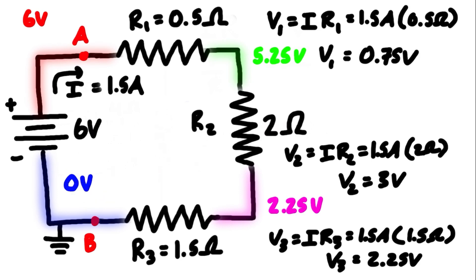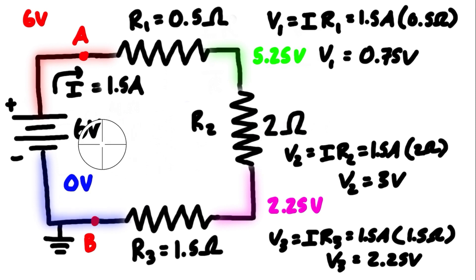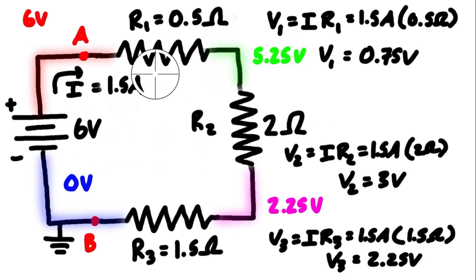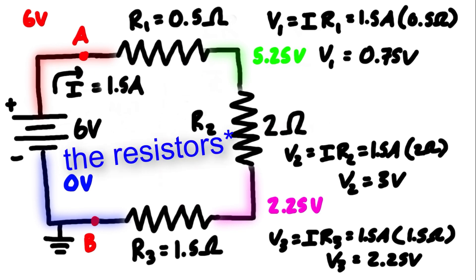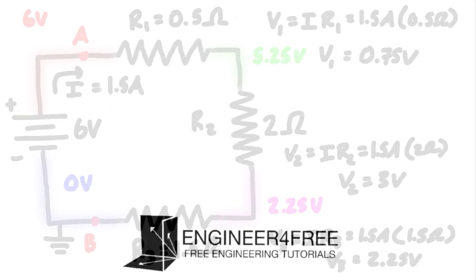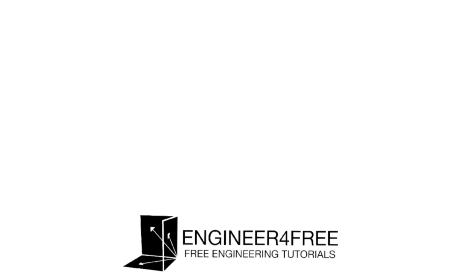Going around the loop like that is referred to as Kirchhoff's Voltage Law — you return to the same voltage you started with in a single loop. The total 6-volt source is divided among the resistors: 0.75 V, 3 V, and 2.25 V, which add up to 6 volts. Each resistor carries the same current but a different voltage drop — that's why we call it a voltage divider circuit. See you in the next video for another example.